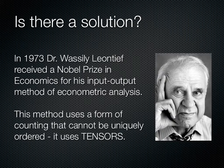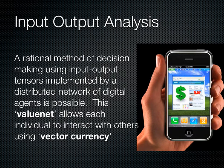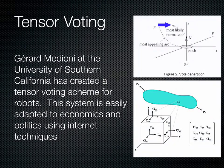Is there a solution? In 1973, Dr. Vassily Leontief received a Nobel Prize in Economics for his input-output method of econometric analysis. This method uses a form of counting that cannot be uniquely ordered — it uses tensors. A rational method of decision-making using input-output tensors implemented by a distributed network of digital agents is possible. This value net allows each individual to interact with others using vector currency. Gerard Medioni at the University of Southern California has created a tensor voting scheme for robots, which is easily adapted to economics and politics using internet techniques.